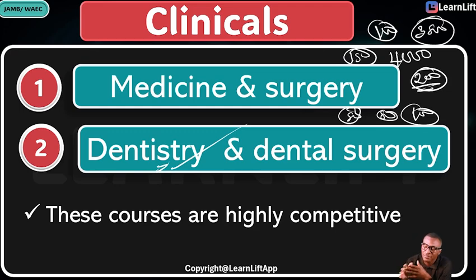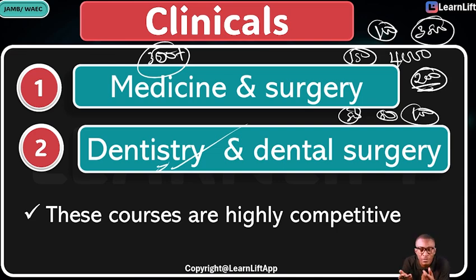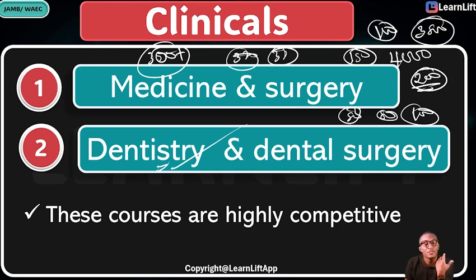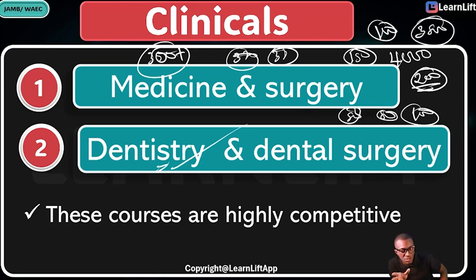These courses are highly competitive. That is why if you must read Medicine and Surgery or any of these clinical courses, you have to be on a score of 300 plus. And when I talk about 300 plus, I'm not referring to 301 or 302, because a lot of people will have that score. If you have 302 or 305, your chances of getting these courses are still slim because you're going to see students come with 320, 330, 340, 350. You need to be at the top of your game.